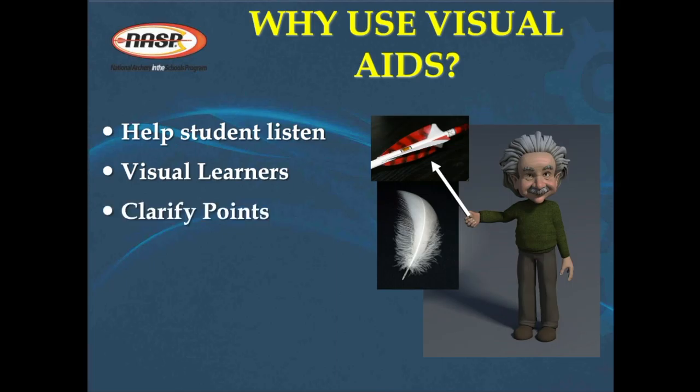You can clarify points using visual aids. For example, if you're talking about feathers on an arrow, some people may be thinking of a conventional feather straight off a bird, but as soon as you show them fletching vanes or feathers on an arrow, they can make that transition from what they were thinking about to reality.